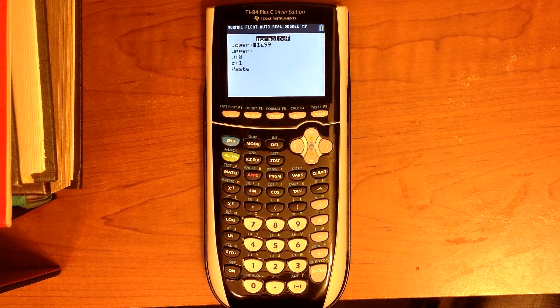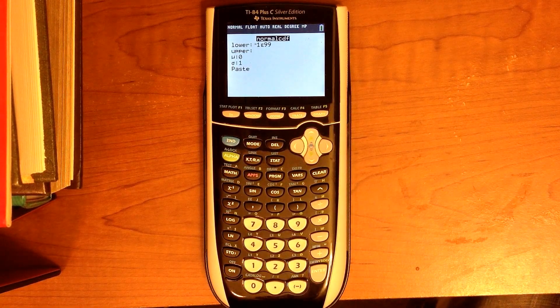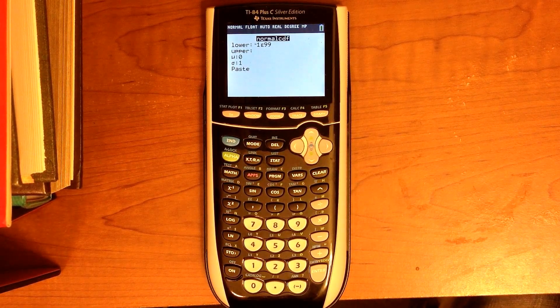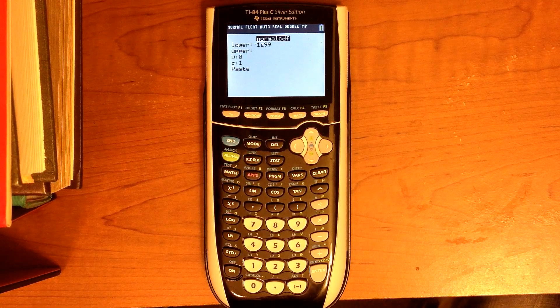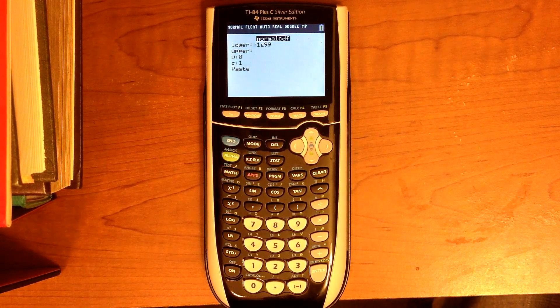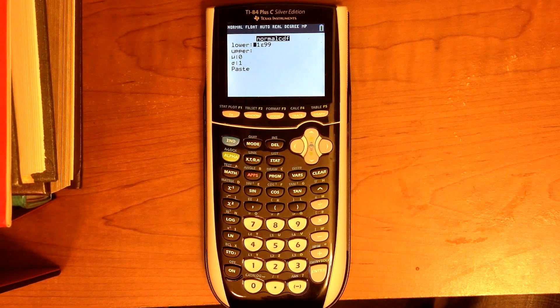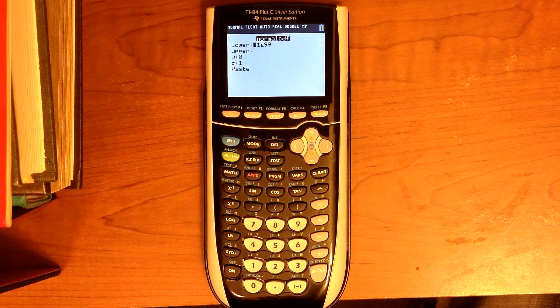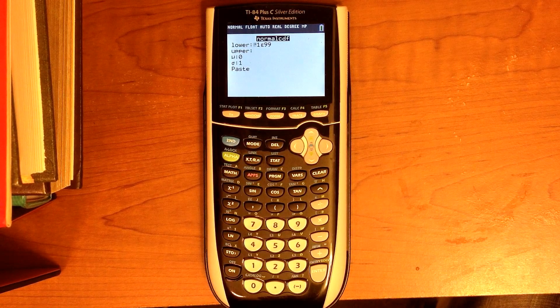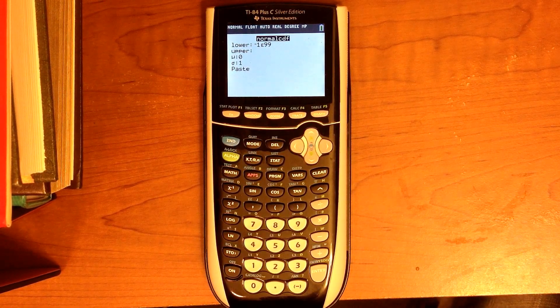If you hit Enter, if you have an 84, you will see this screen asking for four parameters: the lower limit, the upper limit, the mean (represented by mu), and the standard deviation (sigma). It's going to calculate the area under the curve between the lower and upper value.